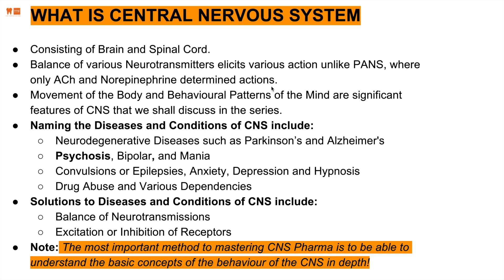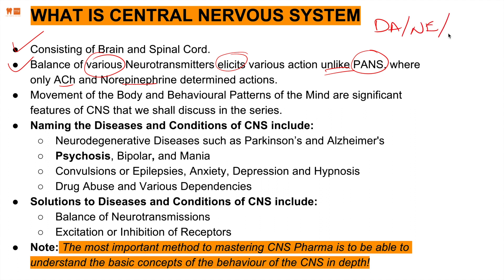Before we dive into psychosis, it's important to understand the basis. The central nervous system contains the brain and spinal cord. The balance of various neurotransmitters elicits various actions, unlike the parasympathetic nervous system where there is only acetylcholine and norepinephrine. In the CNS there are many neurotransmitters: dopamine, norepinephrine, and serotonin, also known as 5-HT.